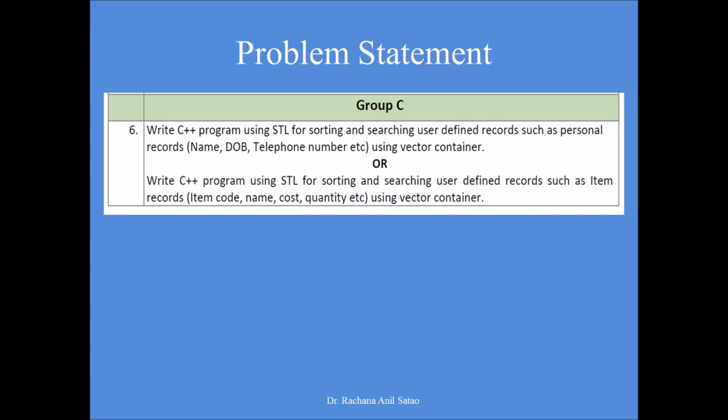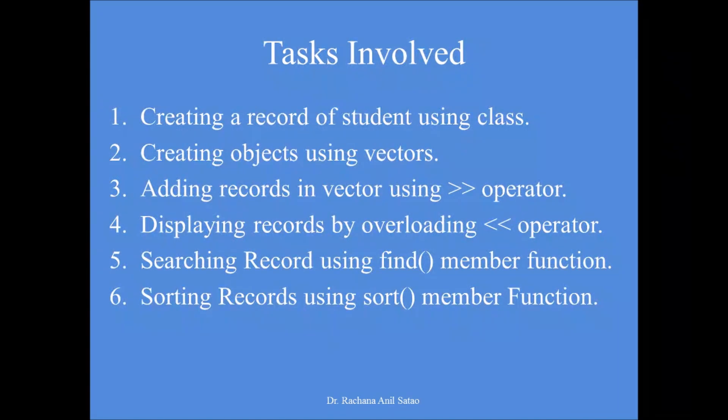The statement given in the syllabus is: write a C++ program using STL for sorting and searching user-defined records such as personal records, which will include name, date of birth, telephone number, etc., using a vector container. We can also write a similar program using STL for sorting and searching item records. Here we are going to implement a personal record of a student with roll number, name, and telephone number. You can add variables as per your requirements.